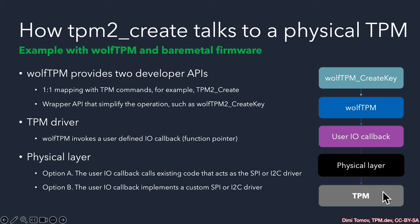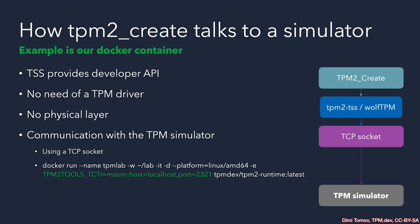The response of the TPM walks in the opposite direction. For our lab environment, we use Docker and a TPM simulator. Because we use a simulator, there is no need for a TPM driver and there is no physical layer. The TPM simulator talks to us using a TCP socket. For WolfTPM, we just specify it as a build option. Once built, when we issue the TPM create command and address WolfTPM, it has to send it over a TCP socket to talk to the TPM simulator. When the command is processed, it is sent back over TCP to WolfTPM and the result is provided to us.